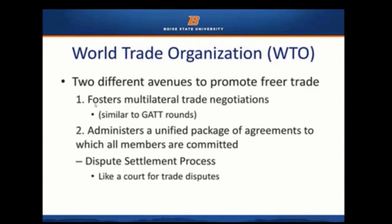The World Trade Organization operates along two main avenues. One is fostering multilateral trade negotiations — like the GATT, it brings member countries together, sets the agenda, and facilitates negotiations where trade barriers are lowered and contentious issues are dealt with. There's a lot of action during these trade negotiations in terms of reducing trade barriers.